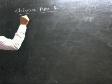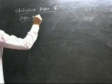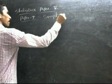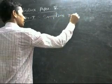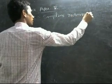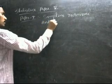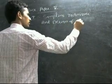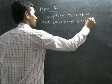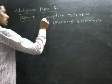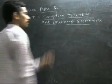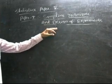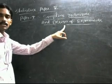The paper title will be Sampling Techniques and Design of Experiments. The whole syllabus can be classified into 5 units. The first three units will be sampling techniques and the remaining 2 units will be design of experiments.